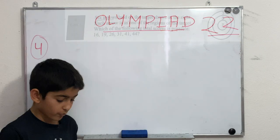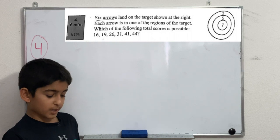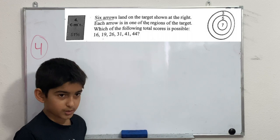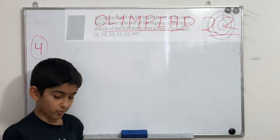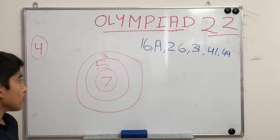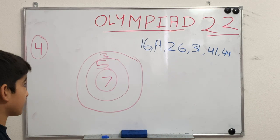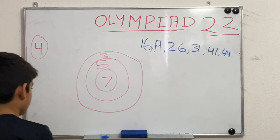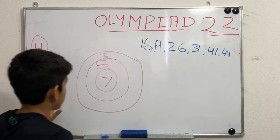The fourth problem says: six arrows land on a target, each in one of the regions. Which of the following total scores is possible: 16, 19, 26, 31, 41, or 44? If all six arrows hit the 3-point region, the minimum is 18, so 16 is eliminated. If all six hit the 7-point region, the maximum is 42, so 44 is also eliminated.